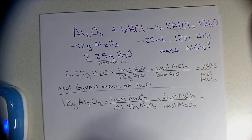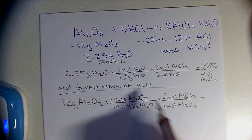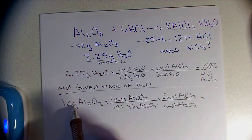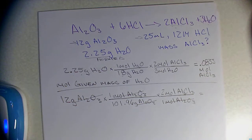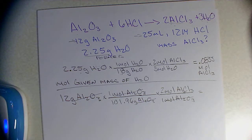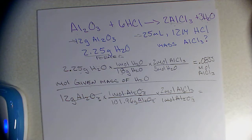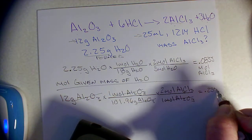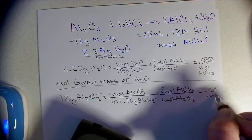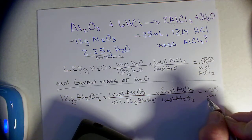That gives me moles produced. I can double-check: moles of Al₂O₃ cancel out, mass of Al₂O₃ cancels out. There are no magic numbers — just times 2, divided by 101.96 — and that is 0.235 moles of AlCl₃.